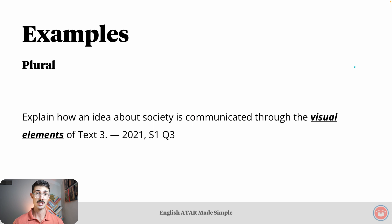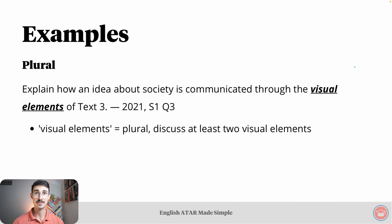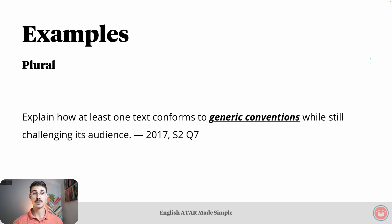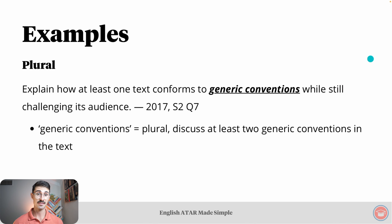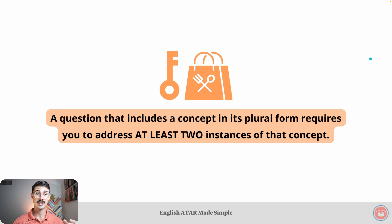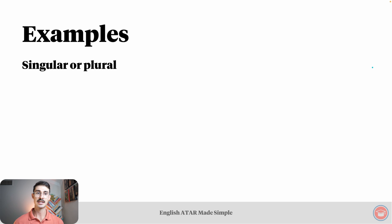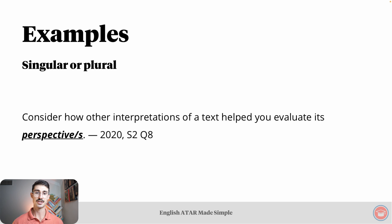Now let's look at some plural examples. 'Explain how an idea about society is communicated through visual elements of text three.' Here, 'visual elements' is plural, meaning we need to discuss at least two visual elements. Another example: 'Explain how at least one text conforms to generic conventions while still challenging its audience.' Here, 'conventions' is plural, meaning we need to discuss at least two generic conventions. The key takeaway: a question that includes a concept in its plural form requires you to address at least two instances of that concept.